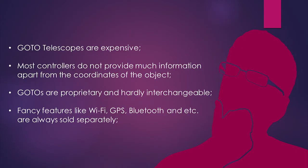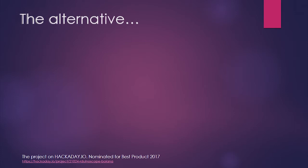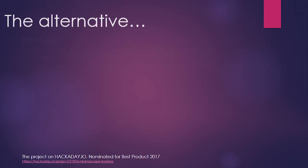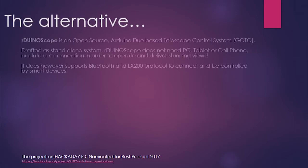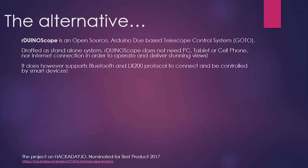We all face the same situation when looking for a modern go-to telescope. Go-to telescopes are expensive, most controllers do not provide information, go-tos are proprietary and hardly interchangeable, and fancy features like WiFi, GPS, Bluetooth, and more are always sold separately. That is why I decided to create ArduinoScope, a telescope go-to controller system which fits every telescope mount.